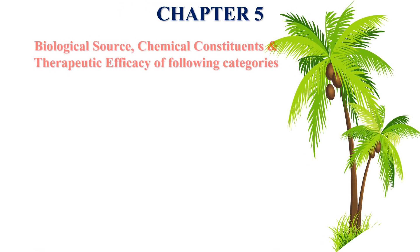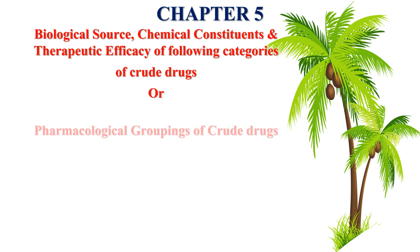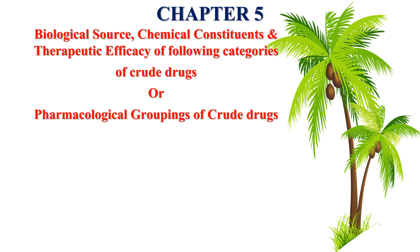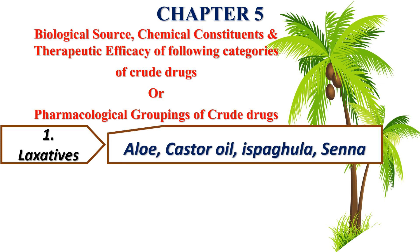Chapter five covers biological source, chemical constituents, and therapeutic efficacy of the following categories of crude drugs — also called pharmacological groupings of crude drugs. The first category is laxatives, in which we will study aloe, castor oil, isabgula, and senna.